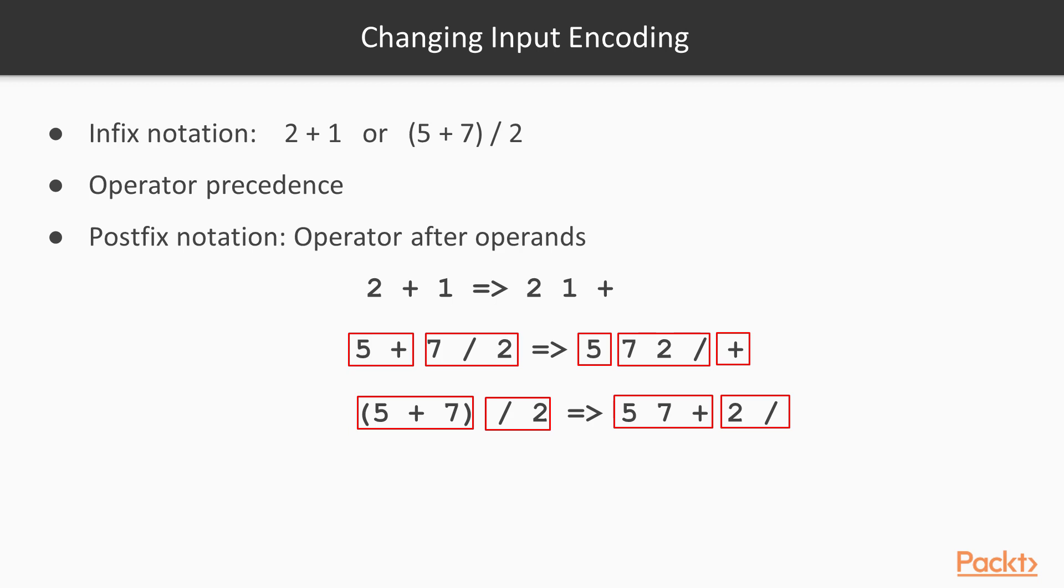A different notation, called postfix, is far simpler. In this notation, the operator comes after the operands. The result does not depend on the operator precedence, but on the order in which the expression is formulated. Let's see some examples. Here we have the simplest example: 2 plus 1 becomes 2 1 plus. Notice how the operator is after the operands.